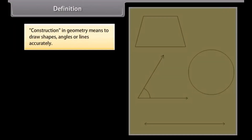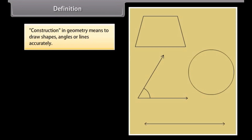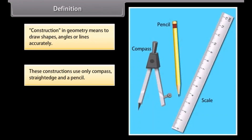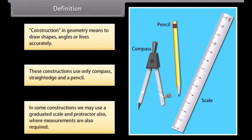Construction in geometry means to draw shapes, angles or lines accurately. These constructions use only a compass, straight edge (i.e. ruler) and a pencil. In some constructions, we may also use a graduated scale and protractor where measurements are also required.